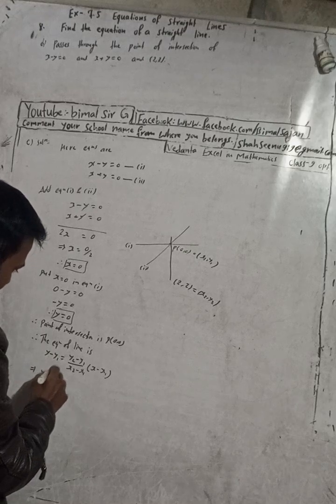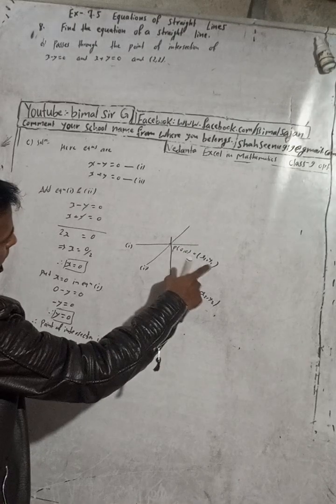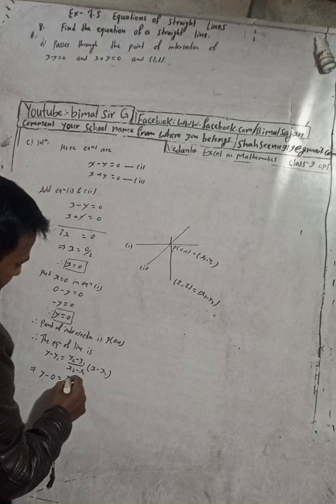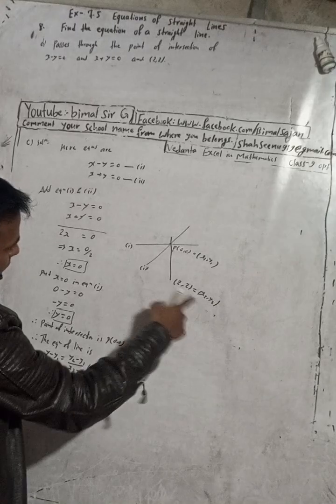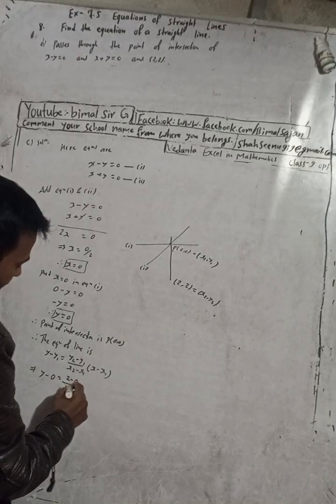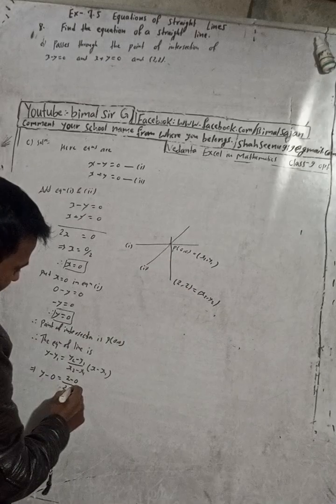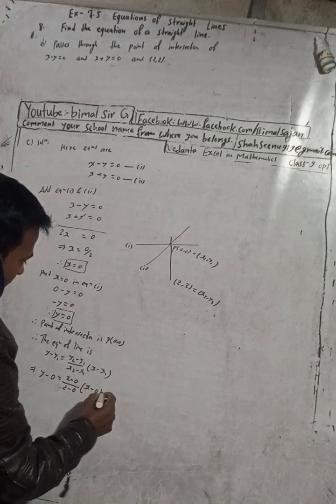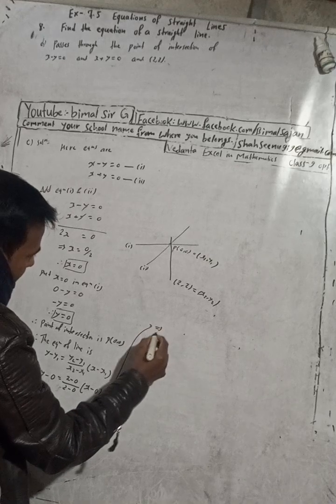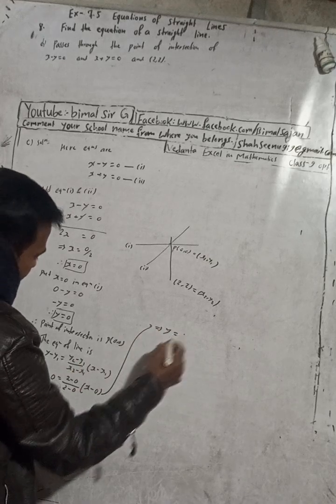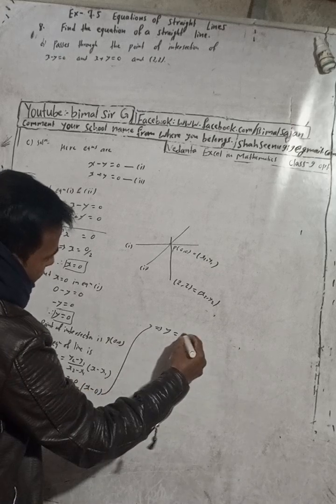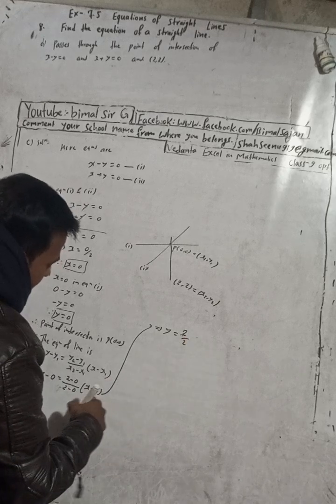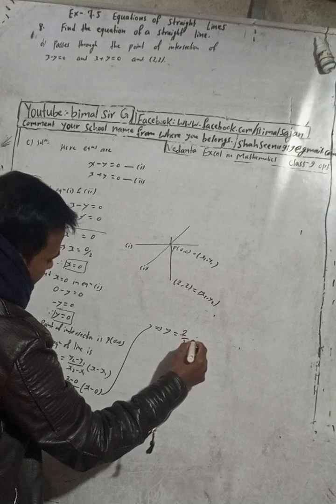So this implies y minus y1, what is y1? y1 is 0 and y2 is 2 minus y1 is 0, and x2 is 2 and x1 is 0, that means x minus x1 is 0. So while I solve it here, this implies y minus 0 is y equals 2 minus 0 is 2, 2 by 2, and here is x minus 0 is x only, so this is x only, I put here x.